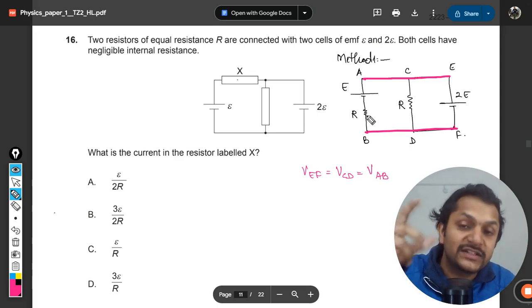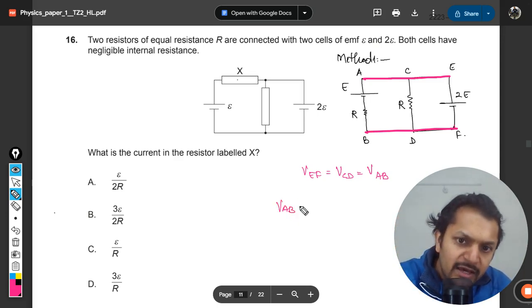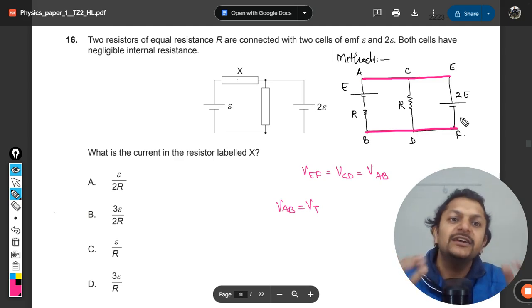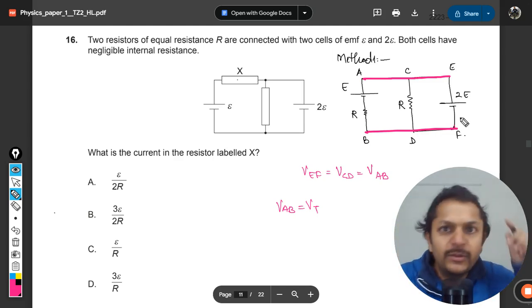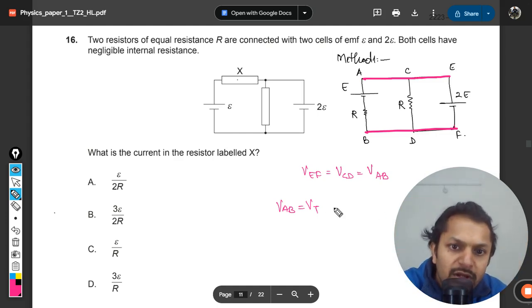In this case the potential difference across ab will be incorporating the resistance also. This Vab becomes the terminal potential difference from the point of view of this battery. The potential difference across ef will be 2e because there is no internal resistance. So Vef equals 2e.